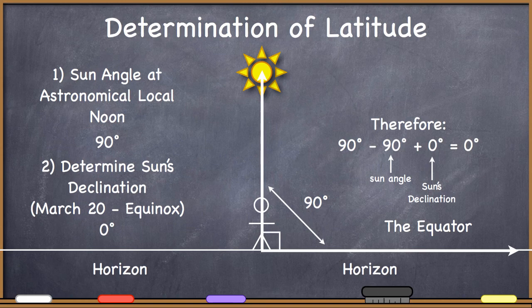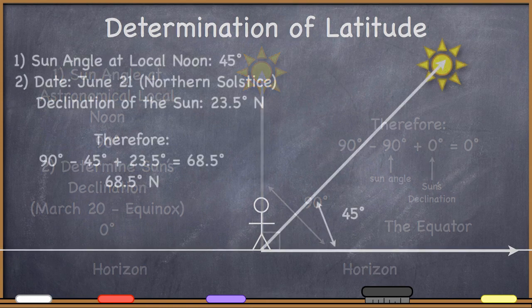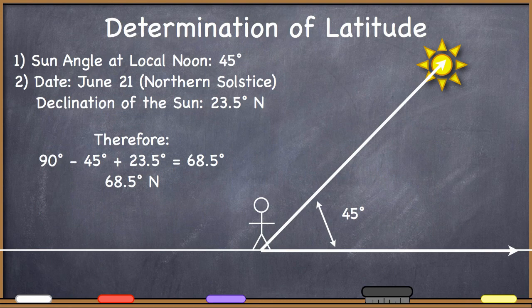That should make sense — you can verify that the equation worked. If the Sun is directly overhead at local noon and it is on one of the equinoxes — in this case March 20th — then if it's an equinox and you see the Sun directly overhead, you must be at the equator. So our equation works.